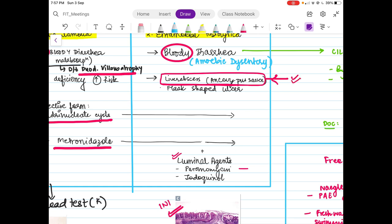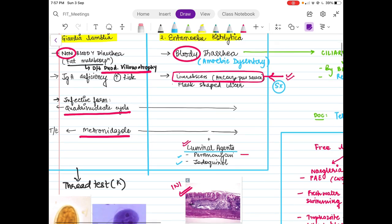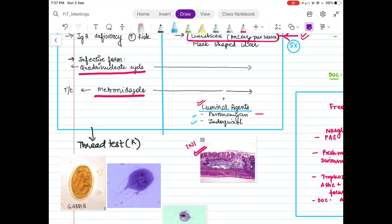This liver abscess has a very famous discharge or color of the sauce which is known as anchovy pus sauce. It's a brown-colored liquid. This is a surgery topic. Add luminal agents, most common being paromomycin and iodoquinol.